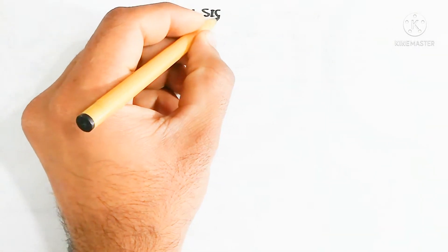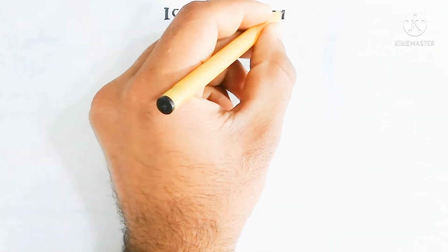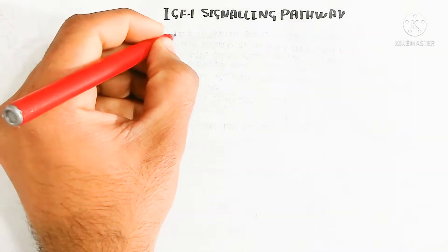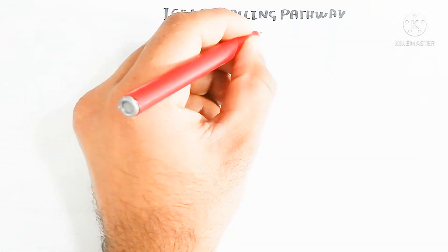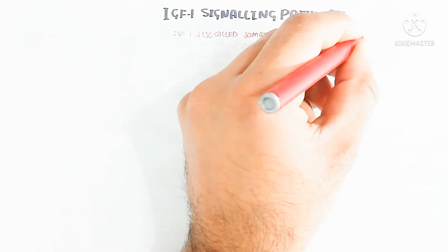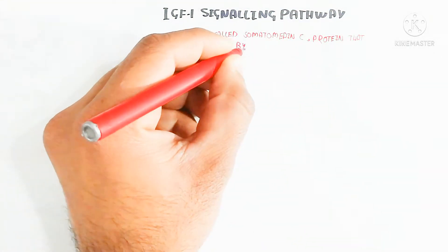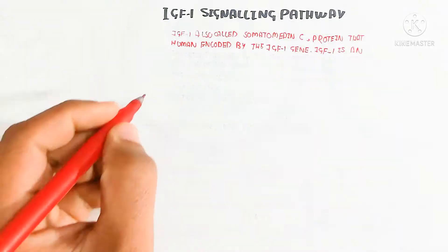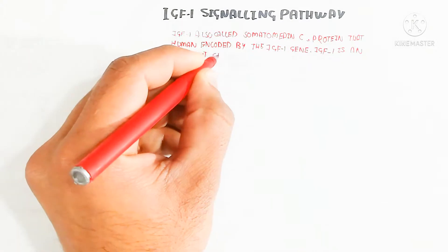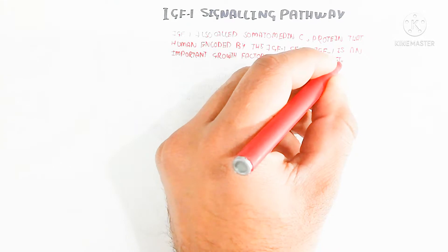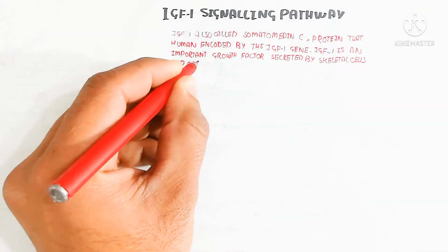In this video we will discuss the insulin-like growth factor 1 (IGF-1) signaling pathway. IGF-1 is also called somatomedin C, and is a protein encoded by the insulin-like growth factor 1 gene.